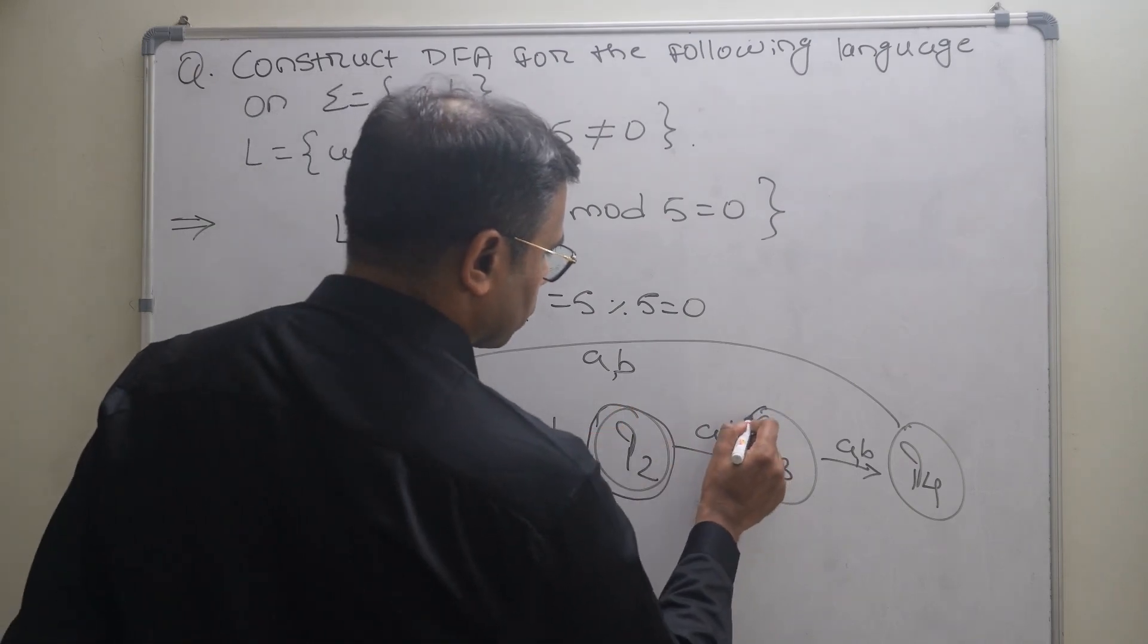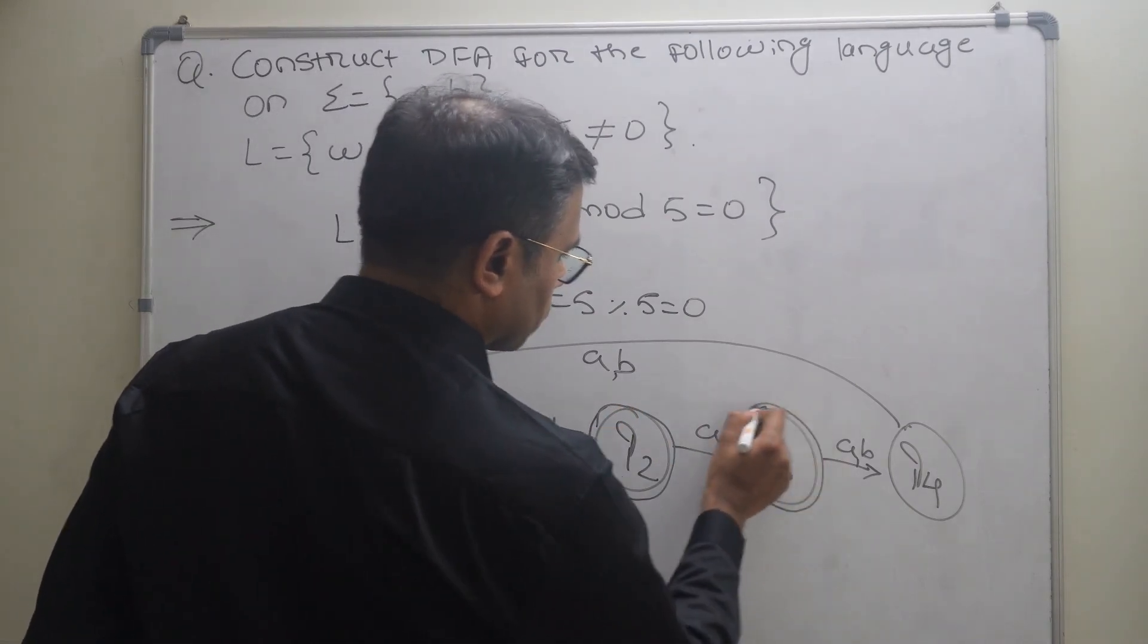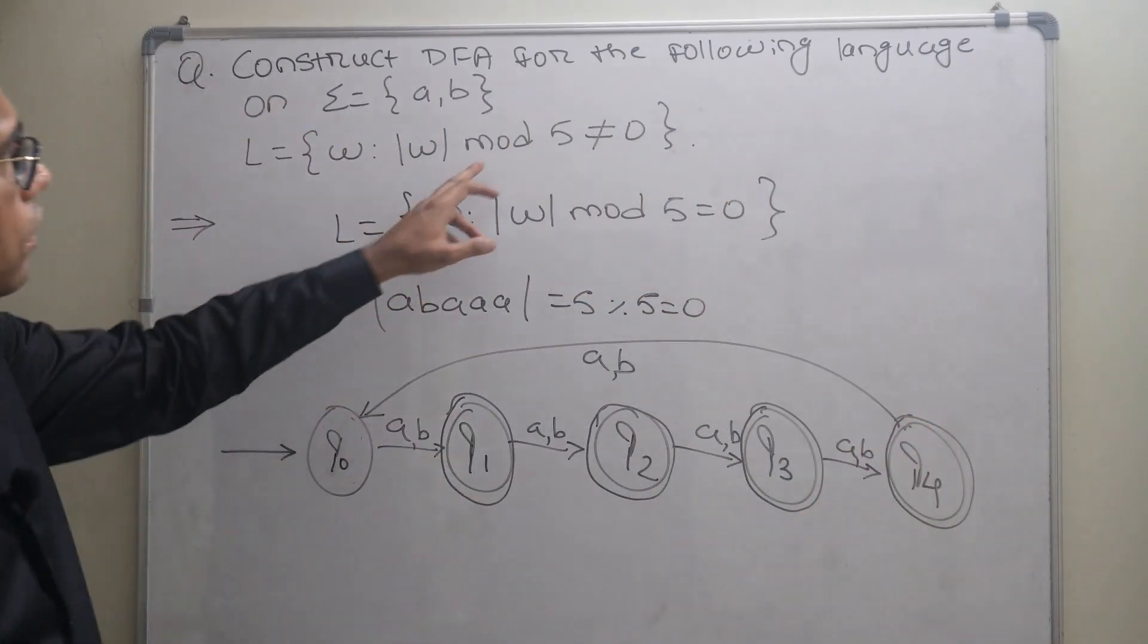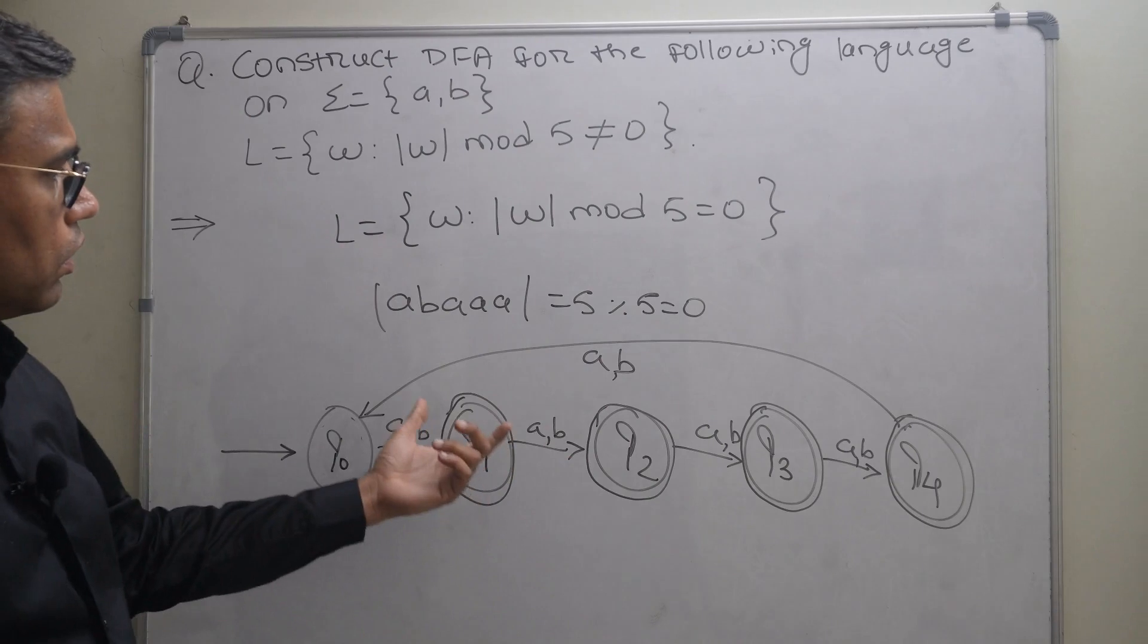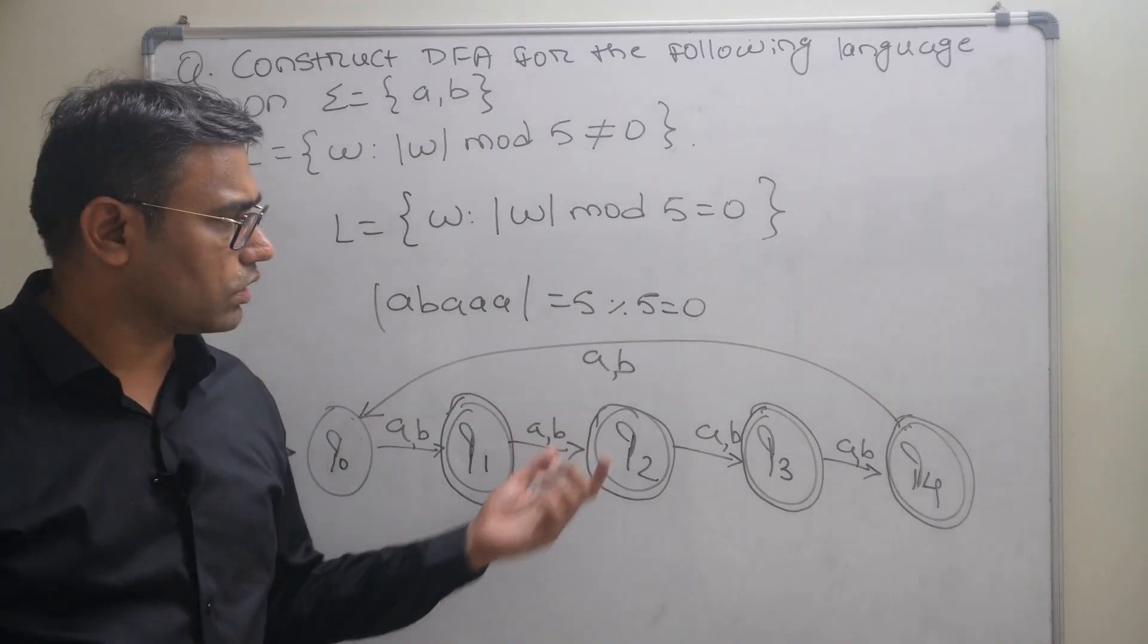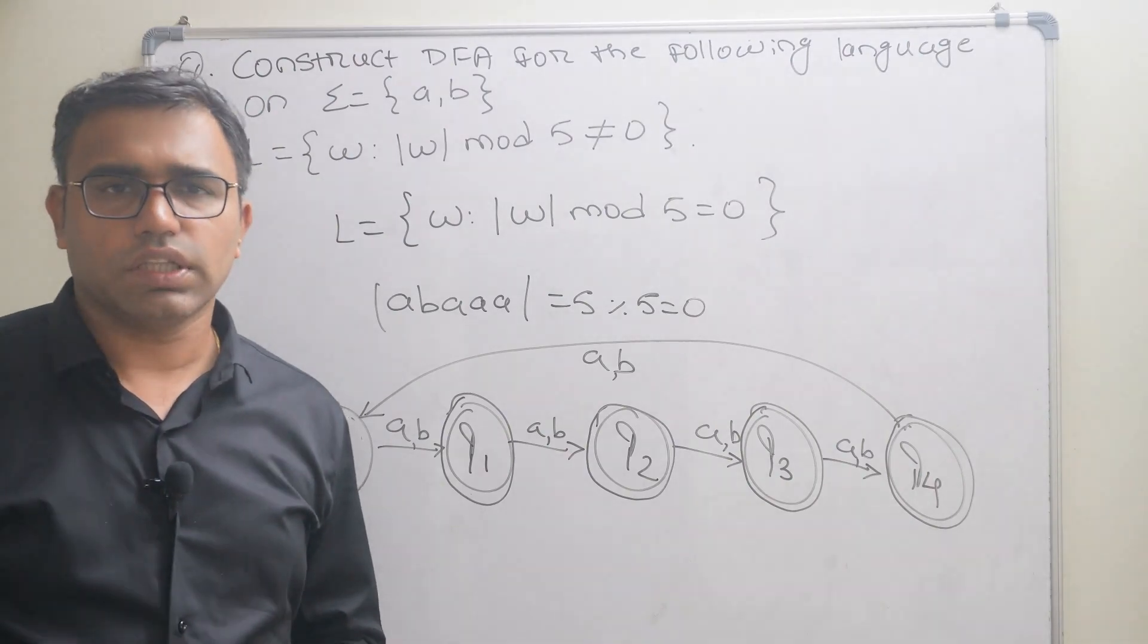So this is how we can solve the question where |w| mod 5 is not equal to 0. That's it for this video. I hope you understand this question. Thank you.